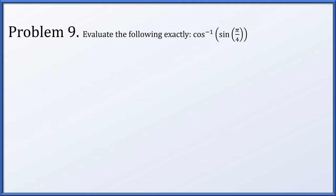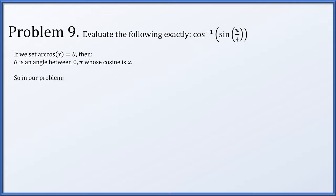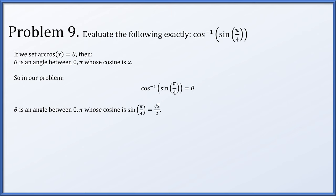Problem 9: evaluate exactly the arc cosine of the sine of pi over four. Setting arc cosine of something equal to theta means theta is an angle between zero and pi whose cosine is x. We want an angle between zero and pi whose cosine equals the sine of pi over four, which is root two over two. The angle between zero and pi whose cosine is root two over two is pi over four.